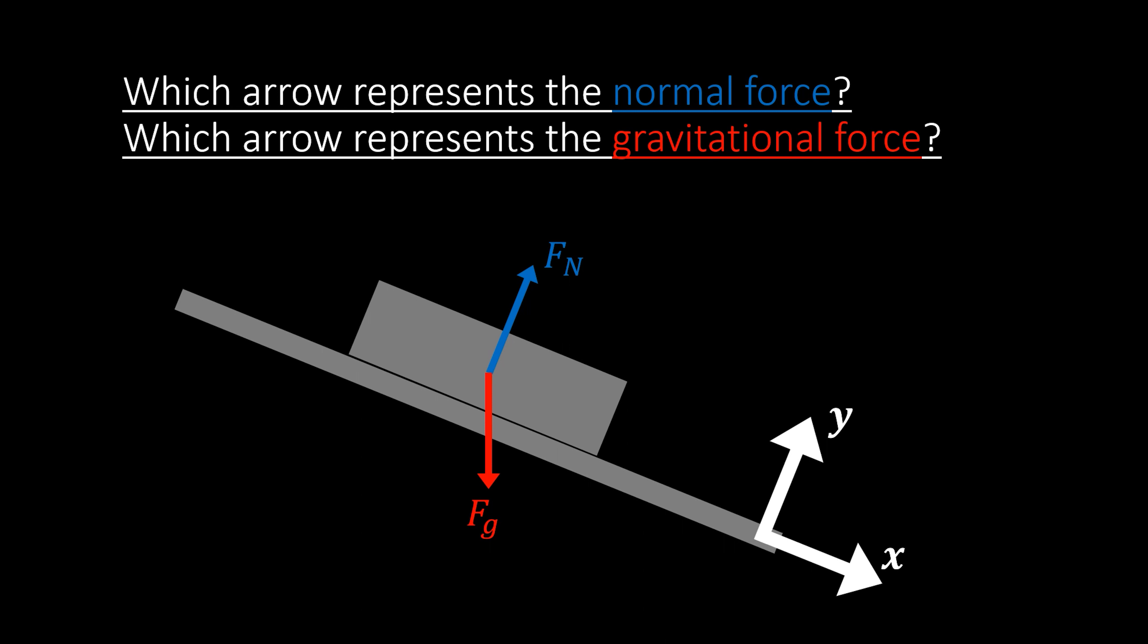So in this case, the ramp isn't flat, we see that it's at an angle. So because of that, the normal force comes out at a 90 degree angle from that ramp. And the gravitational force, we know that points straight down in any situation. So that force is always going to be straight down towards Earth.